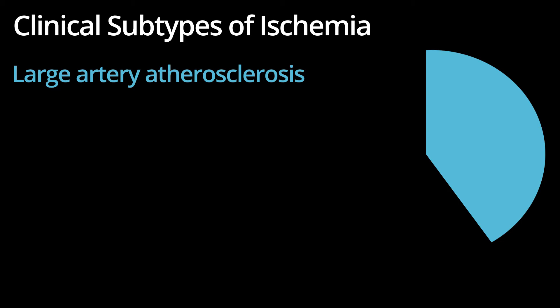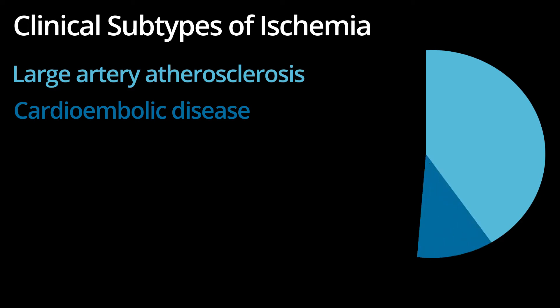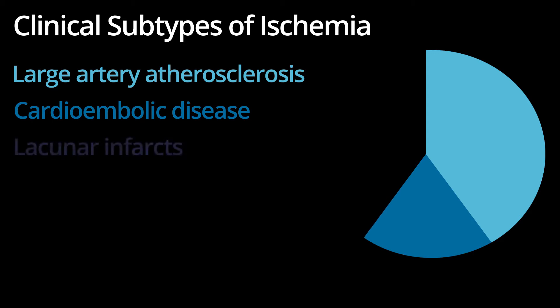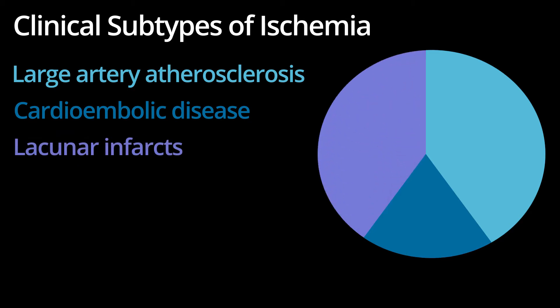The second subtype is cardioembolic stroke. These account for approximately 20% of strokes and are seen with patients with atrial fibrillation or valvular heart disease. The last type is lacunar strokes. These are small strokes, which are often multiple and often involve the basal ganglia and thalami, caused by emboli, atherosclerotic disease, or thrombotic lesions involving small perforator arteries.